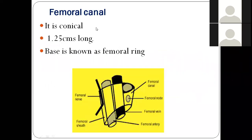Now, the femoral canal: it is like a cone shape. The medial-most compartment of the femoral sheath is the femoral canal. The uppermost covering is the femoral ring. The canal measures 1.25 centimeters in length. The base, shown in black, is the femoral ring.